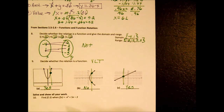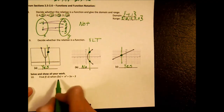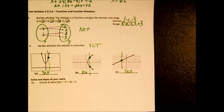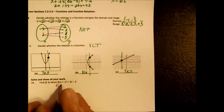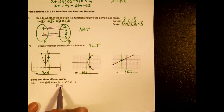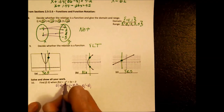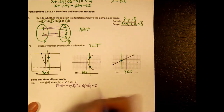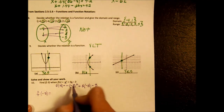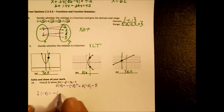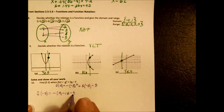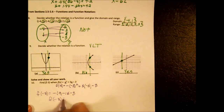Using function notation: find f of negative 3, if f(x) equals negative x squared plus 5x minus 3. Write f of negative 3 and replace every x with negative 3: negative (negative 3) squared plus 5 times (negative 3) minus 3. Square first: negative 3 squared is 9, so the opposite of 9 is negative 9, minus 15 minus 3. f of negative 3 equals negative 27.